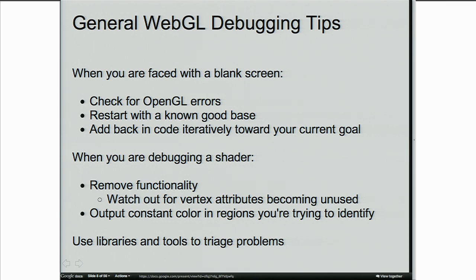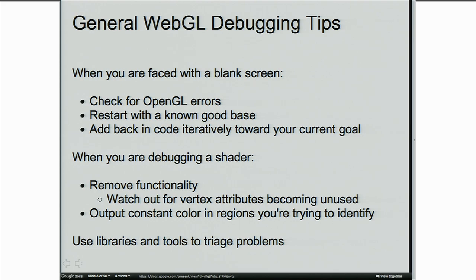When debugging a shader, remove functionality until you're back to something that works. Be careful that as you remove functionality, certain vertex attributes may become unused, making later OpenGL calls invalid. The most useful technique is to output red or some other constant color in regions of the shader where you're trying to identify what's going on. Once you've seen them on screen, add back the actual lighting functionality you're after. There are plenty of libraries and tools available to help triage these issues.